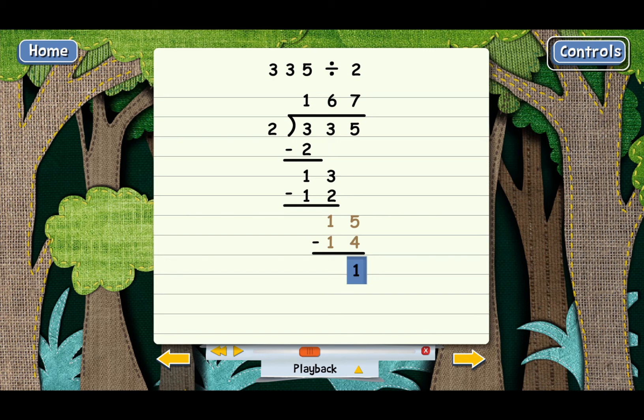You got it. There aren't any more digits to bring down, which means we're done. But notice something different here. On all our other long division problems, we always ended up with zero on the bottom, but here we have a one.